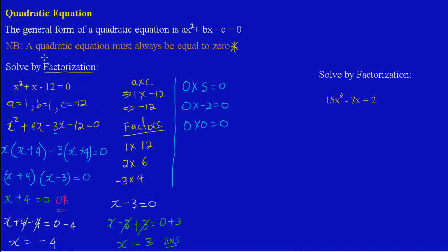Remember, we made a critical note that a quadratic equation must always be equal to 0. So since it's not equal to 0, we're going to have to transpose to equate it to 0. I have a positive 2, so obviously I will have to subtract 2 from both sides of my equation.